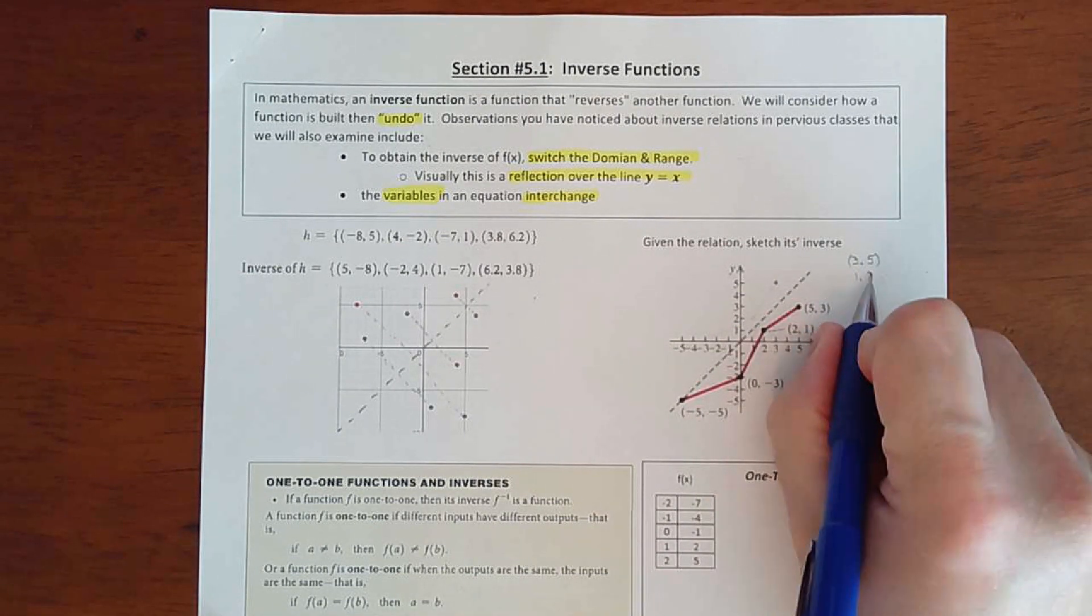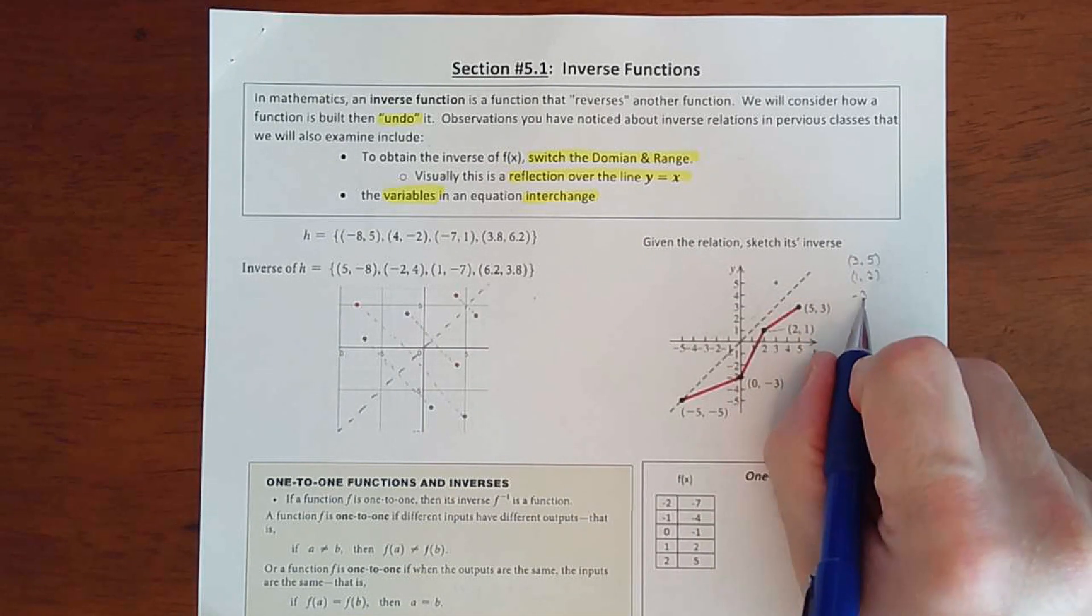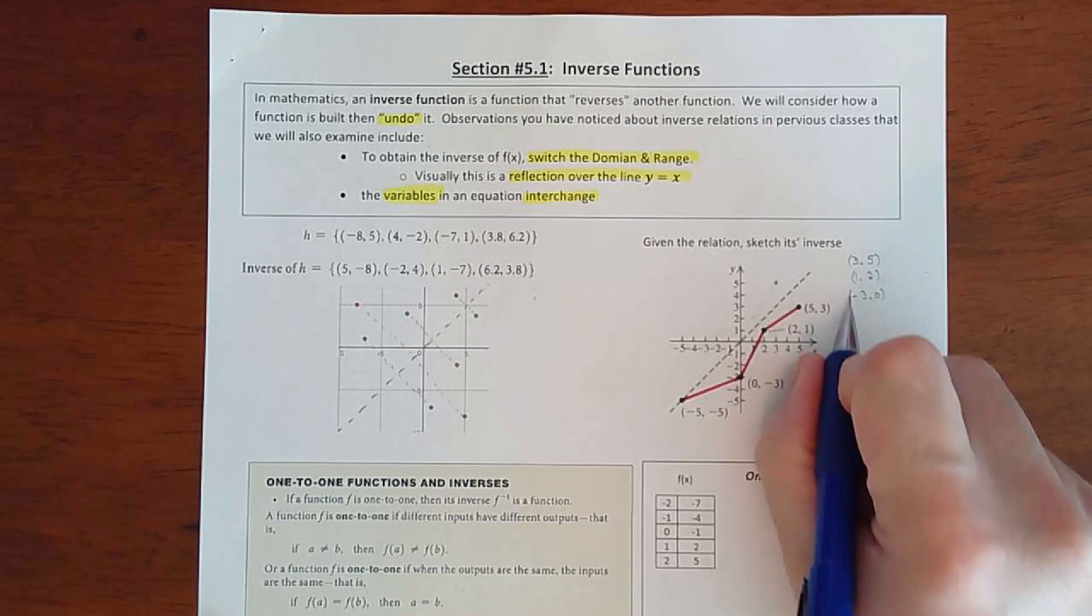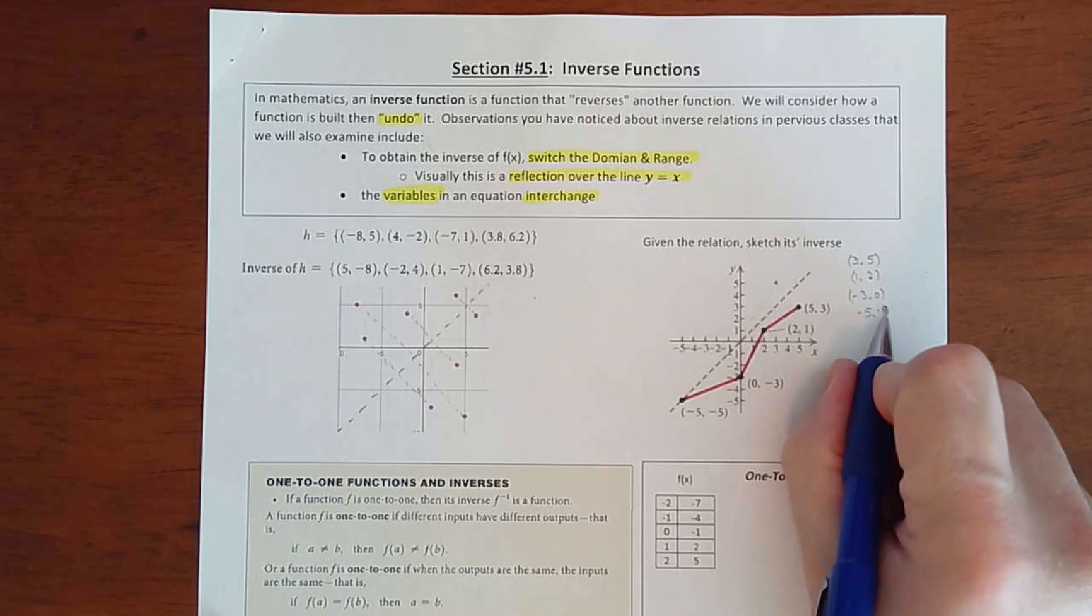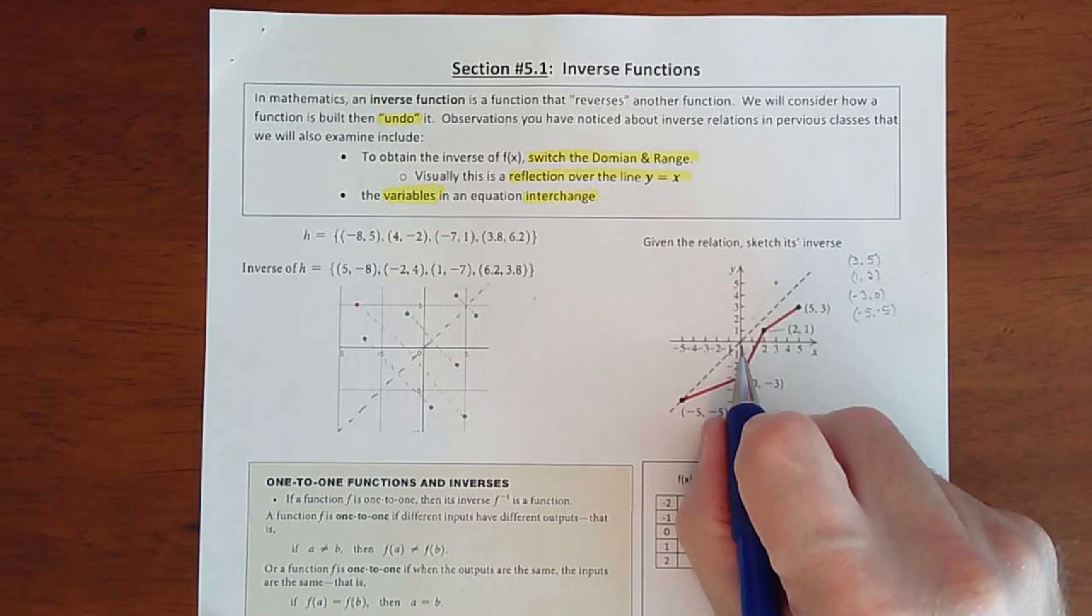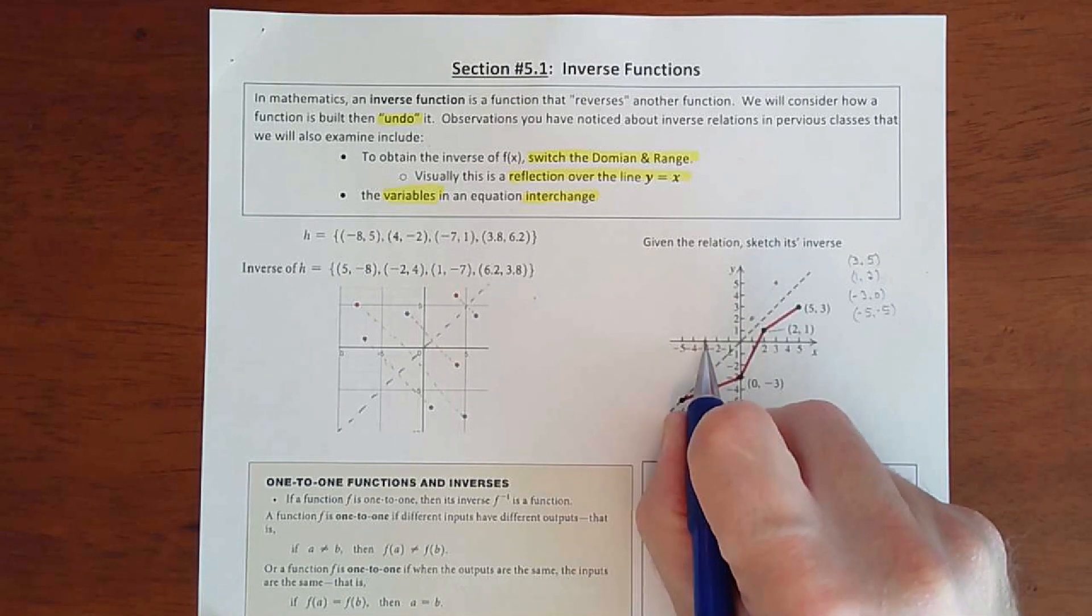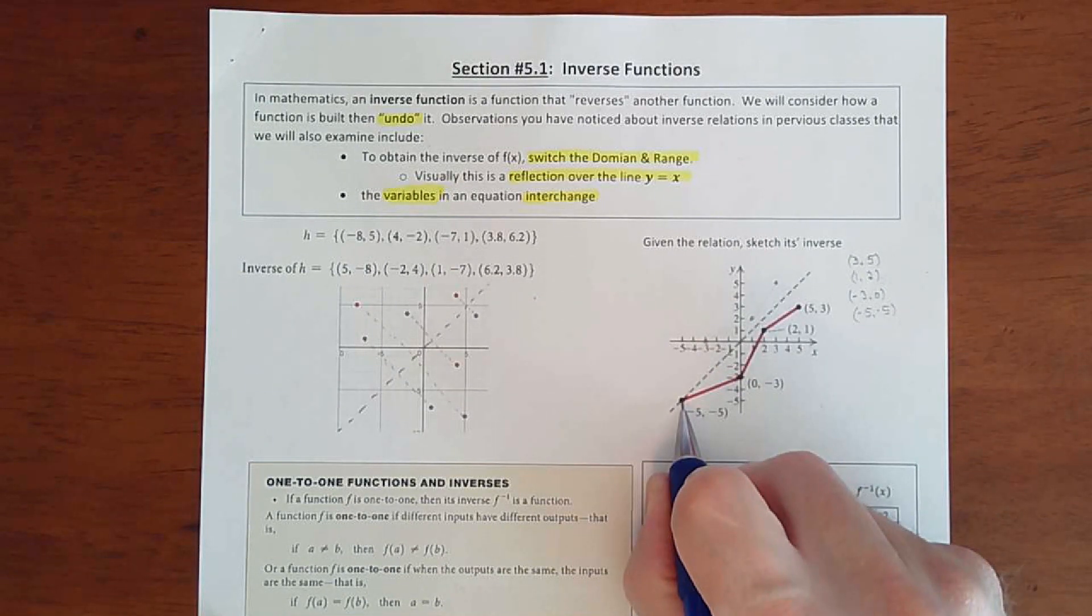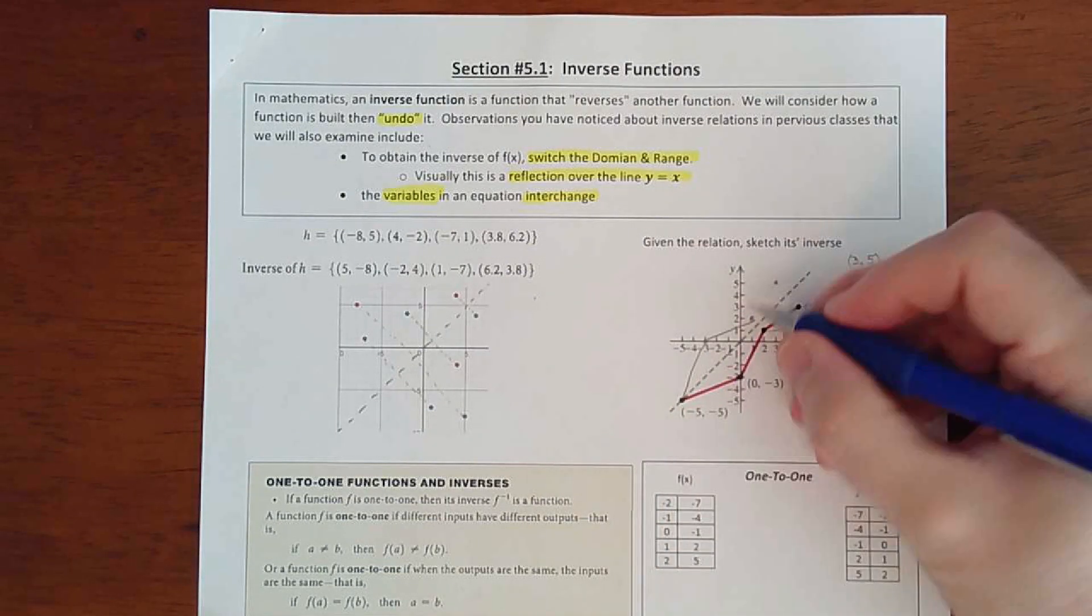If you do 2, 1, that's going to get you 1, 2. You do 0, 3, that's going to get you negative 3, 0. And negative 5, negative 5 doesn't switch, so it's negative 5, negative 5. All right, so 2, 1 becomes 1, 2, and 0, 3 becomes negative 3, 0. Negative 5, 5 doesn't move. If you connect these dots, that is a reflection.